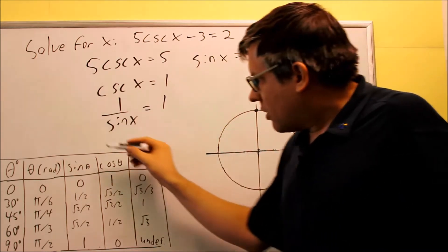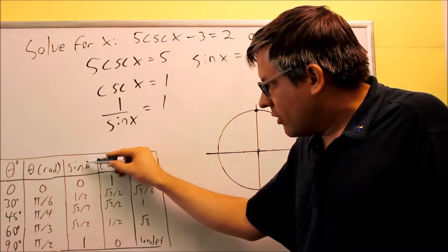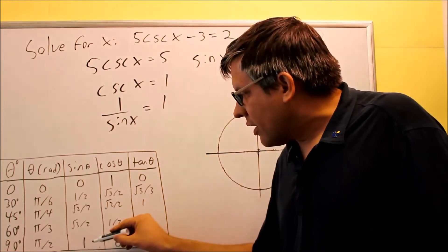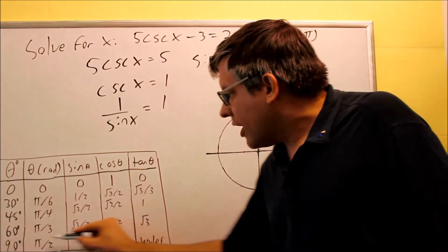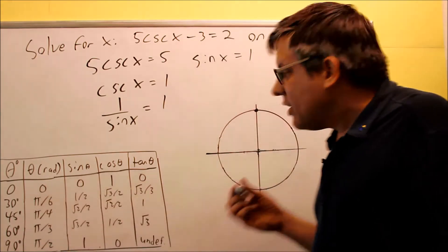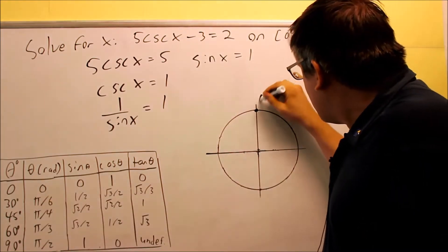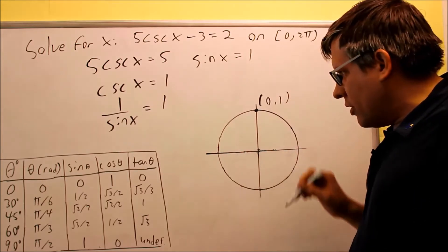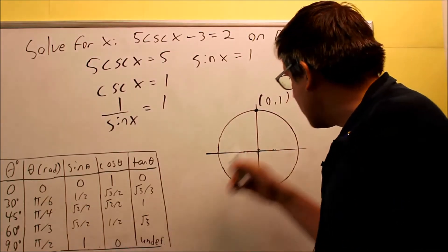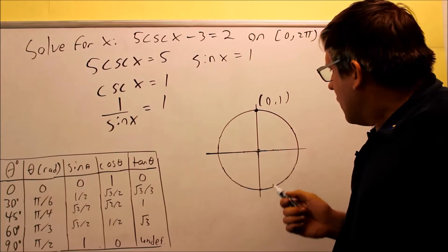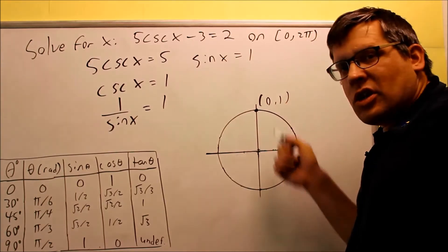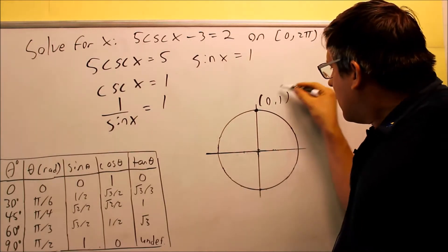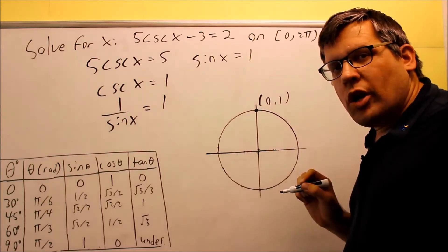When I look at my table, I go down the sine column and I see there's a 1 right there, and that corresponds to an angle of 90 degrees. That's actually this spot right here on the unit circle — that would be (0, 1). The x value is 0, the y value is 1. Now the thing you want to look at is: is there any other place on the unit circle where the y value is going to be equal to 1?